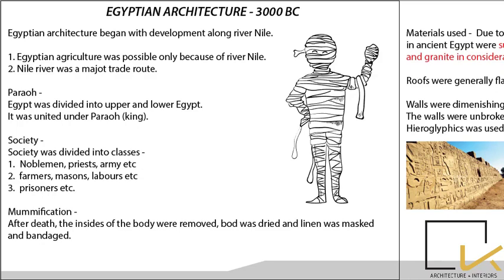A key term that makes Egyptian culture special is mummification. After a person died, the dead parts were removed, the body was dried, and linen was wrapped and bandaged around it. Then it was put into a casket.